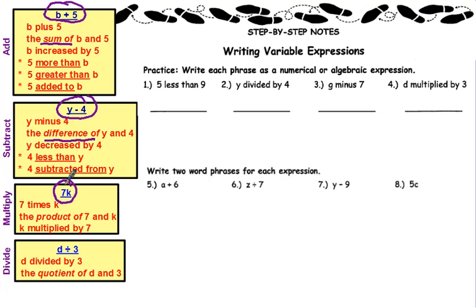Multiplication. You might have 7k. You could say 7 times k, the product of 7 and k, or k multiplied by 7. Remember, a constant next to a variable means to multiply there.